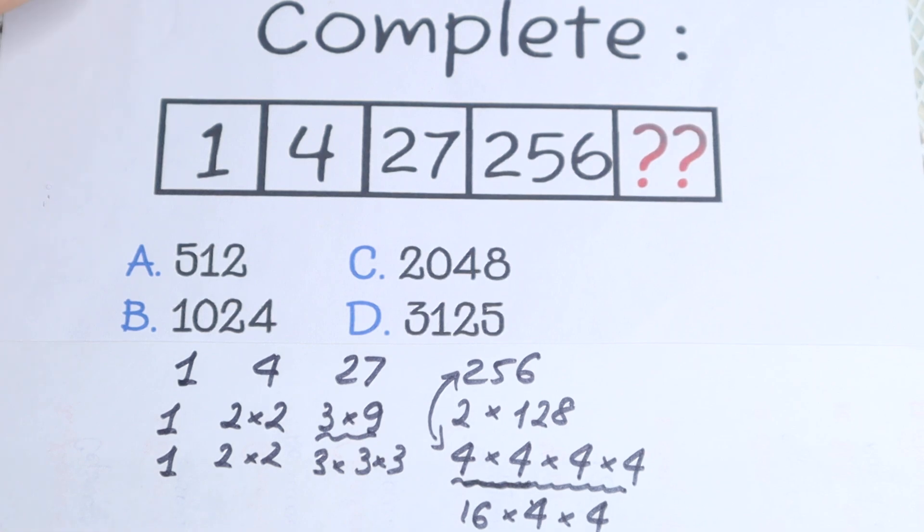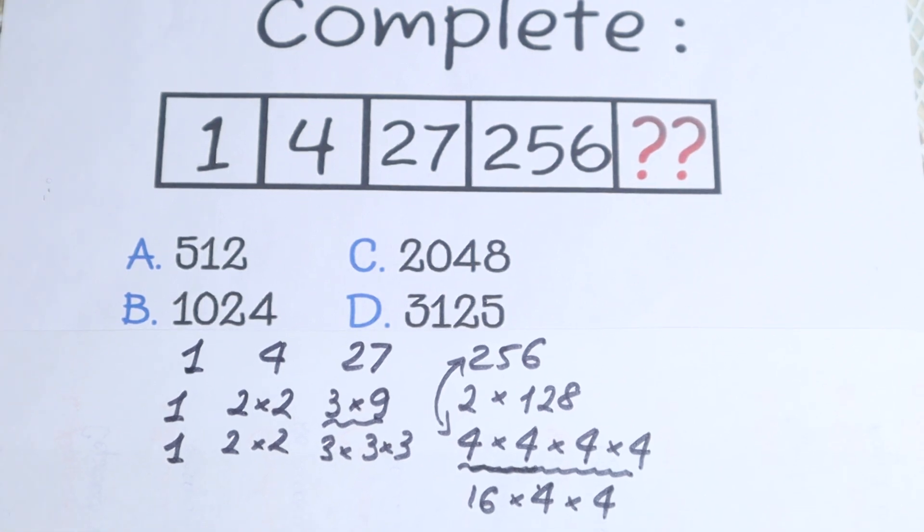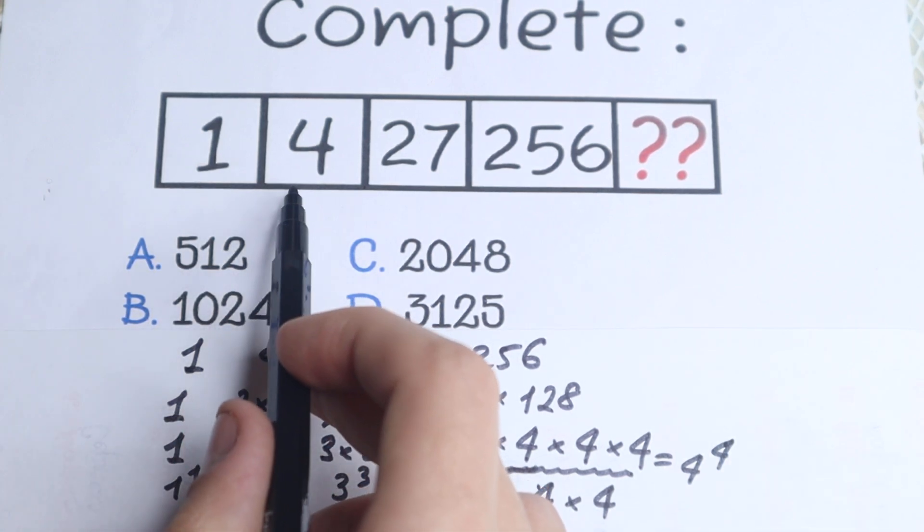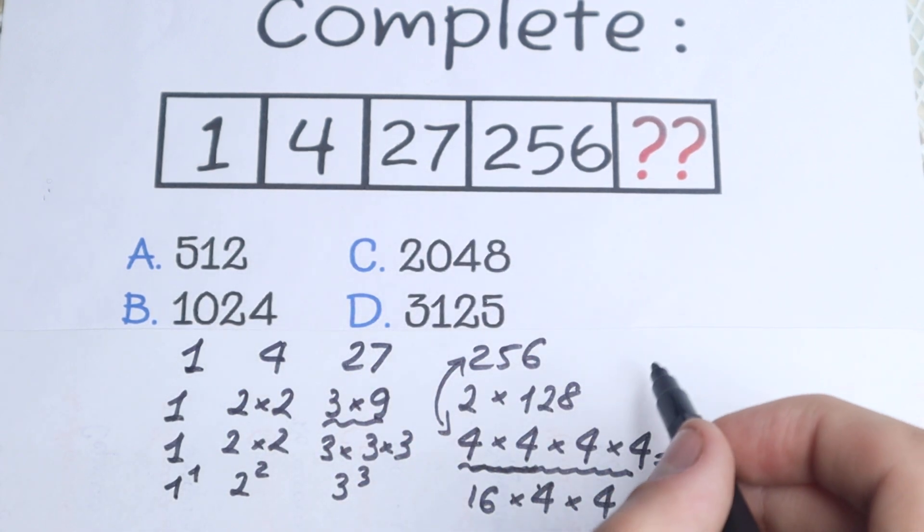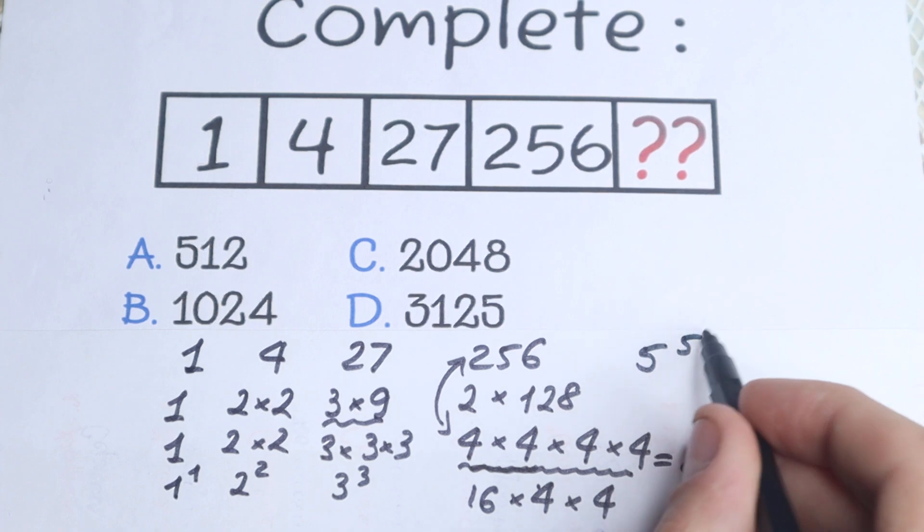OK. But moreover, why I write these expressions? Because this is 1 to the 1st power. This is 2 square. This is 3 cube. This is 4 to the 4th power, which is really great. So this is a natural order. 1, 2 square, 3 cube, 4 to the 4th, and the last number will be 5 to the 5th power.